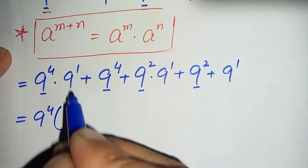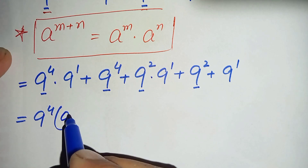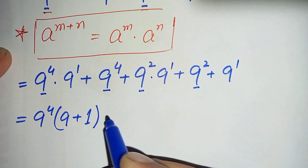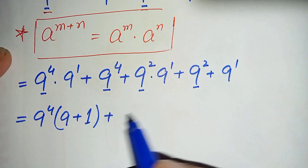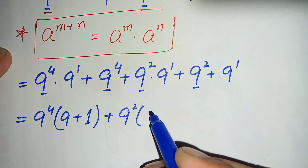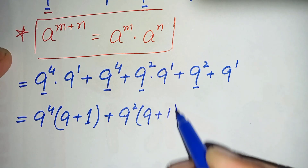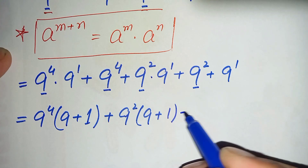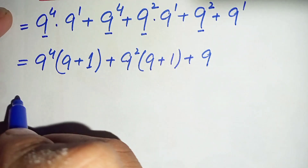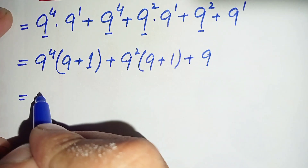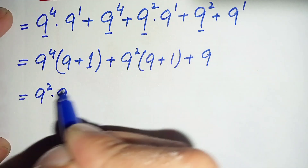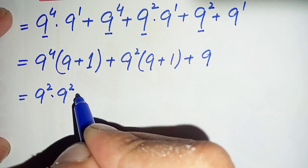After factoring, it becomes: 9 to the power 4 times (9 to the power 1 plus 1), plus 9 to the power 2 times (9 to the power 1 plus 1), plus 9 to the power 1. Now 9 to the power 4 can also be written as 9 to the power 2 times 9 to the power 2, and 9 plus 1 is 10.